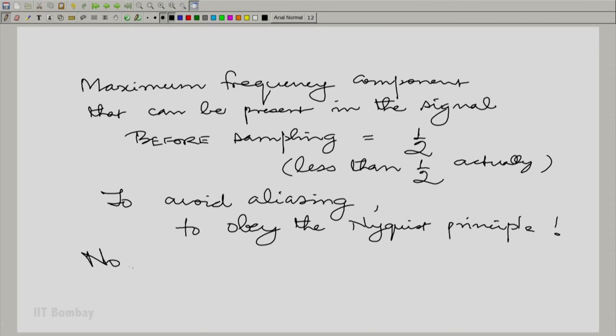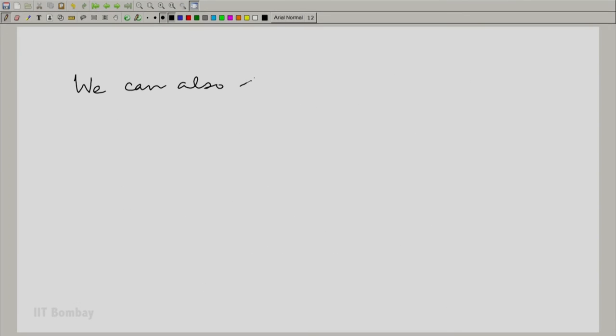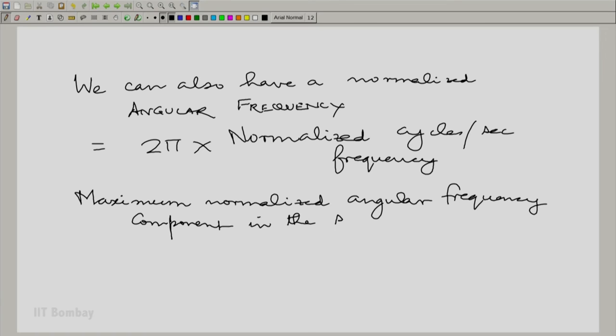This is called the normalized cycles per second frequency. It is the actual cycles per second frequency divided by the actual sampling frequency. It is called normalized to the sampling frequency. But then, you can also have a normalized angular frequency. That normalized angular frequency is 2 pi times the normalized cycles per second frequency. Therefore, the maximum normalized angular frequency component which we can have in the signal should be less than 2 pi into half, which is pi.